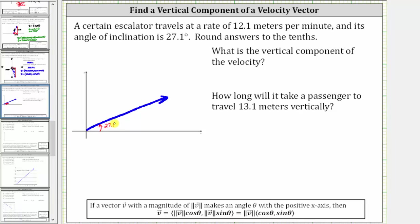This is called the direction of the vector. We often use the angle theta to represent this angle. And because the escalator is traveling at a rate of 12.1 meters per minute, the magnitude or length of the vector is 12.1. Let's also label that.